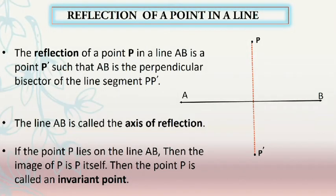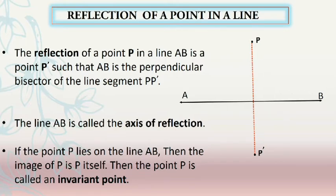Now let us see what is meant by reflection. The reflection of a point P in a line AB is a point P' such that AB is the perpendicular bisector of the line segment PP'. The distance between P and the line AB is equal to the distance between P' and the line AB. The line AB is the perpendicular bisector of the segment joining the object and the image, and is called the axis of reflection.